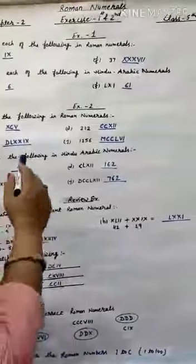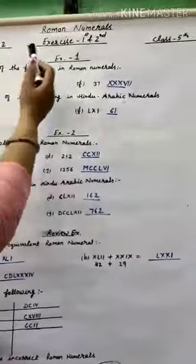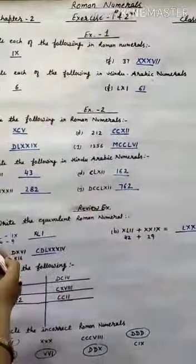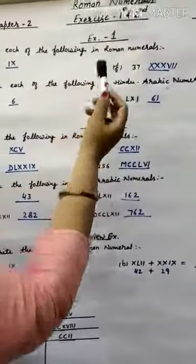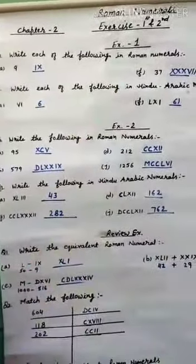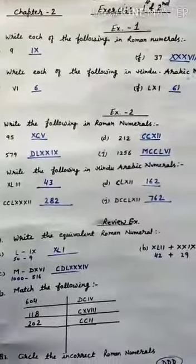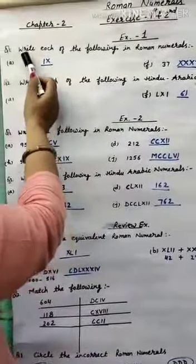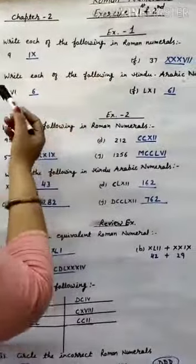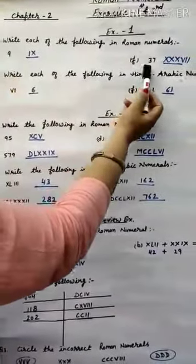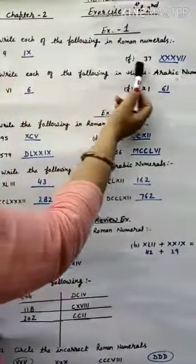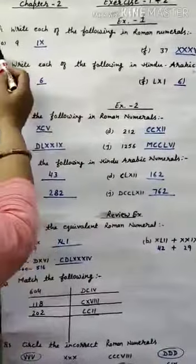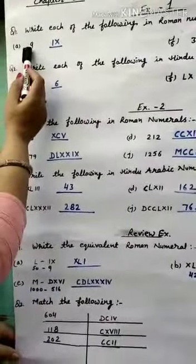Good morning students. Class 5th Chapter 2, Roman Numerals, Exercise 1, 2 and Review Exercise — full chapter we have to do today. First of all, Exercise 1: Write each of the following in Roman Numerals. I have done only two examples; the rest you will do yourself.